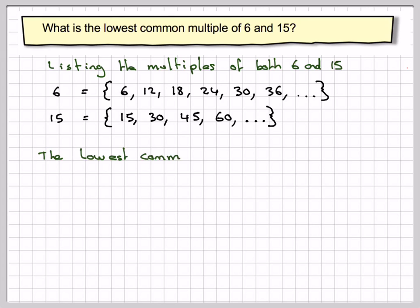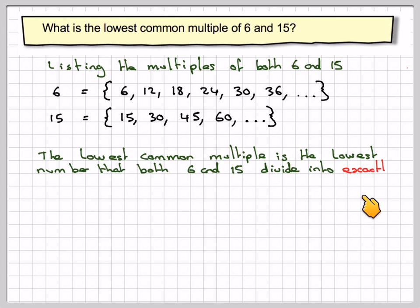Now the lowest common multiple is the lowest number that both 6 and 15 divide into exactly. So looking at these two lists here, we can see that 30 is the lowest common multiple of both 6 and 15.